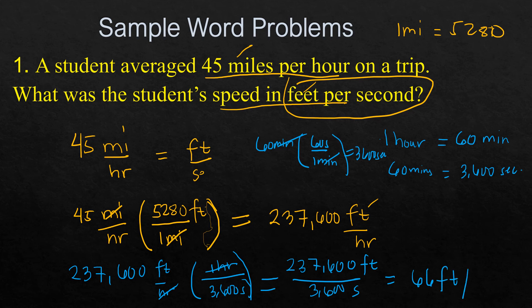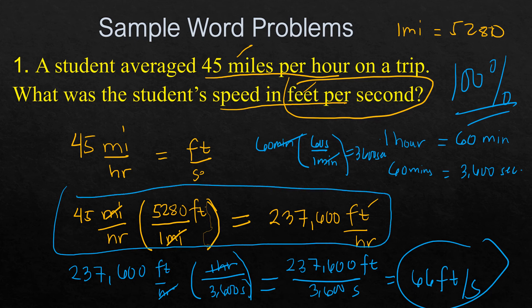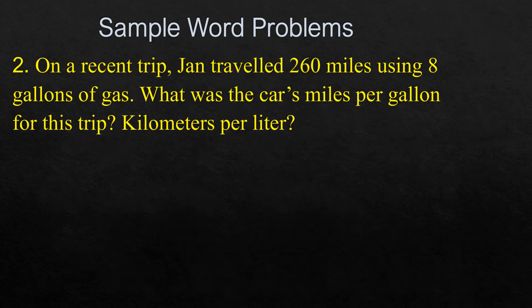The answer is 66 feet per second. One step at a time — that's how you solve these problems. Questions in exams often require two or more conversion steps, but the concept is always the same. Just apply the conversion factors sequentially, canceling units as you go.